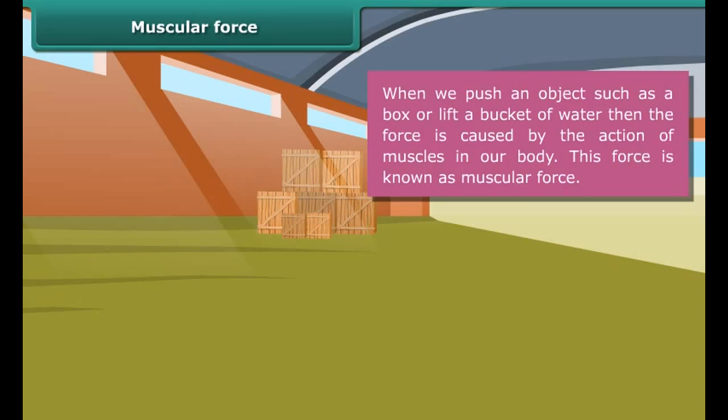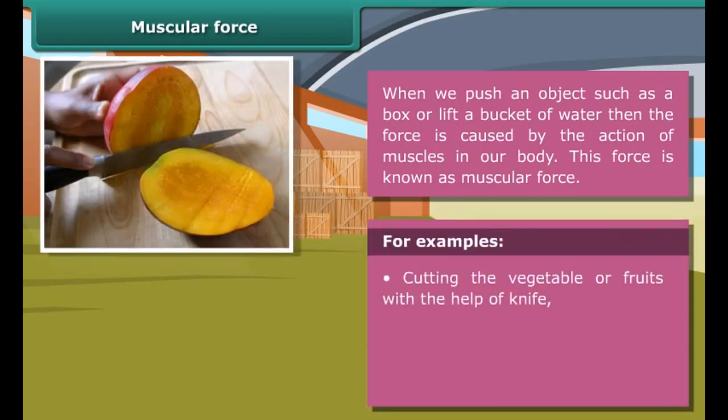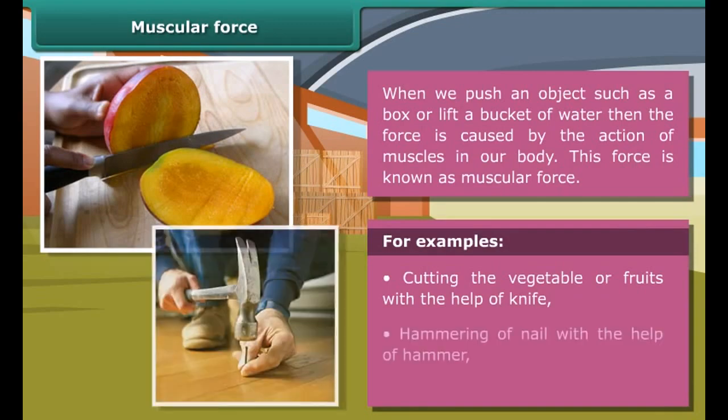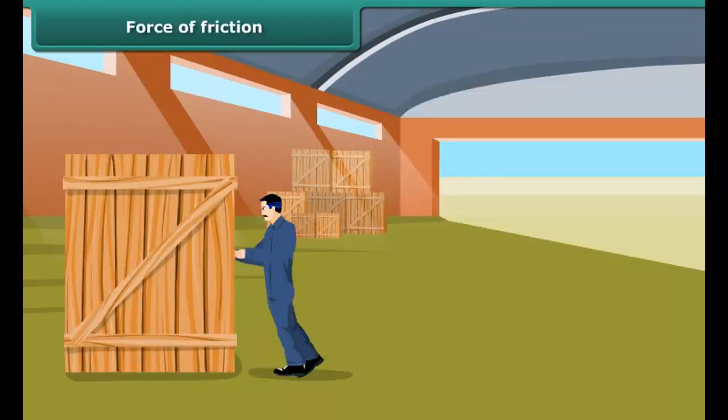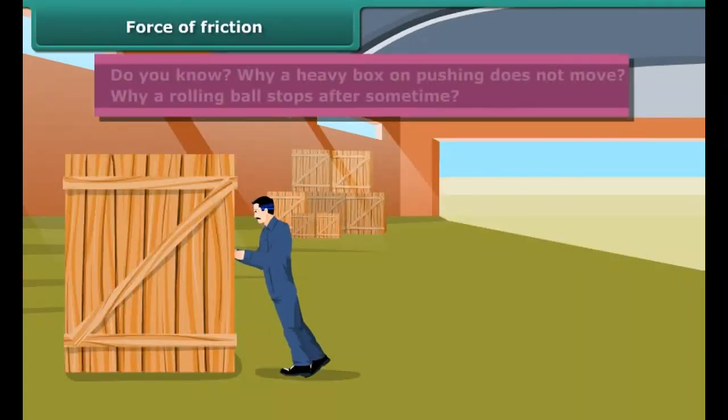Basically these are of two types: muscular force and force of friction. Muscular force: When we push an object such as a box or lift a bucket of water, then the force is caused by the action of muscles in our body. This force is known as muscular force.